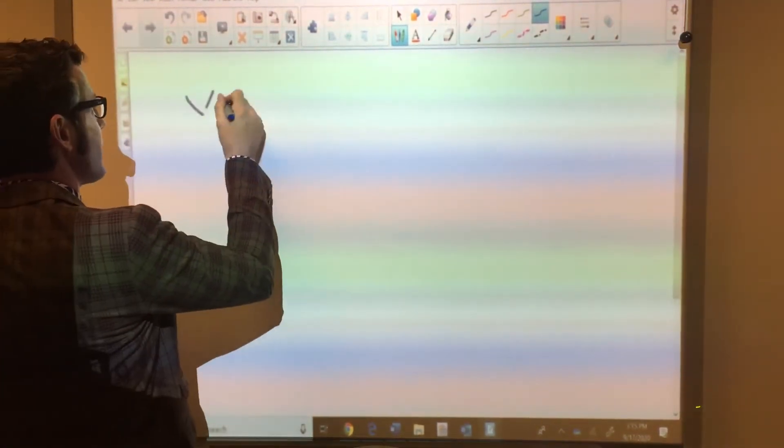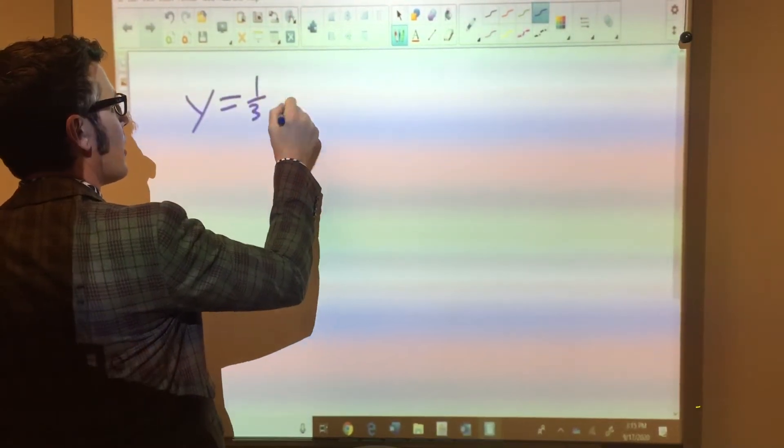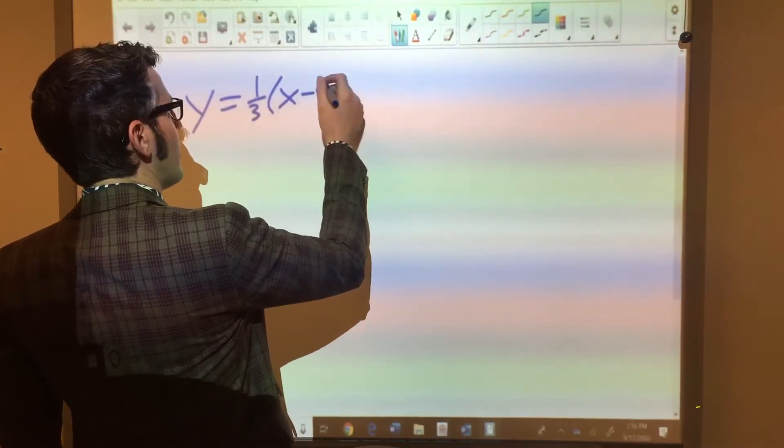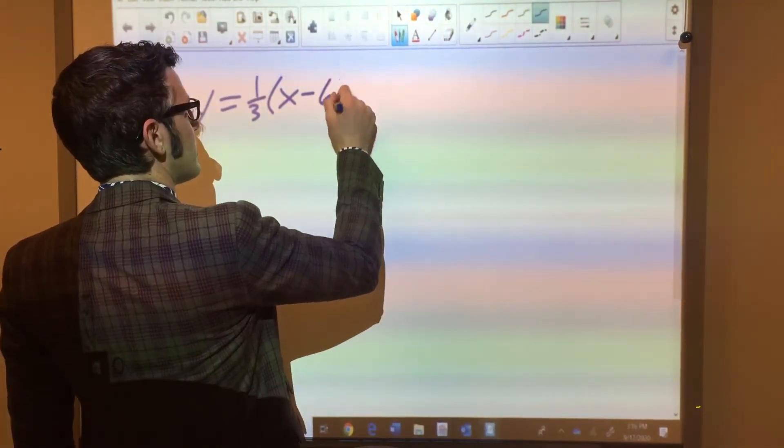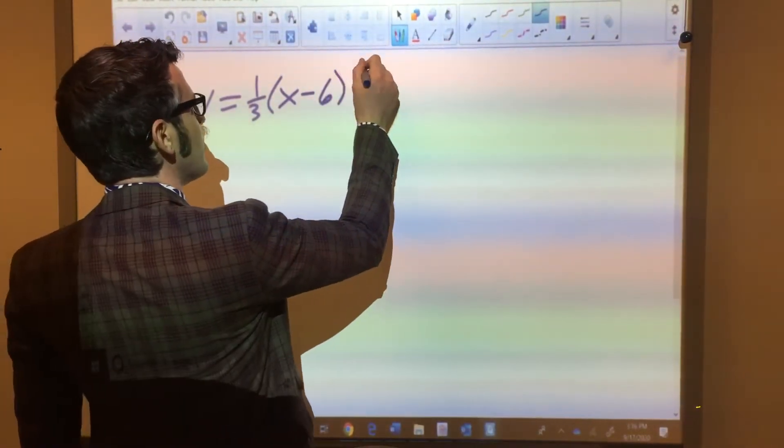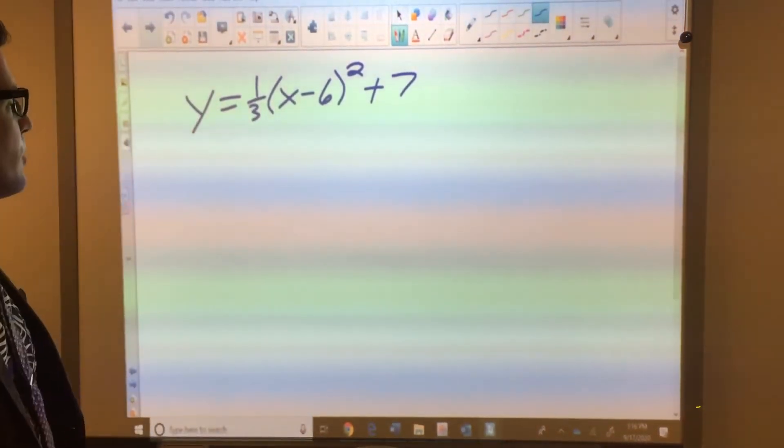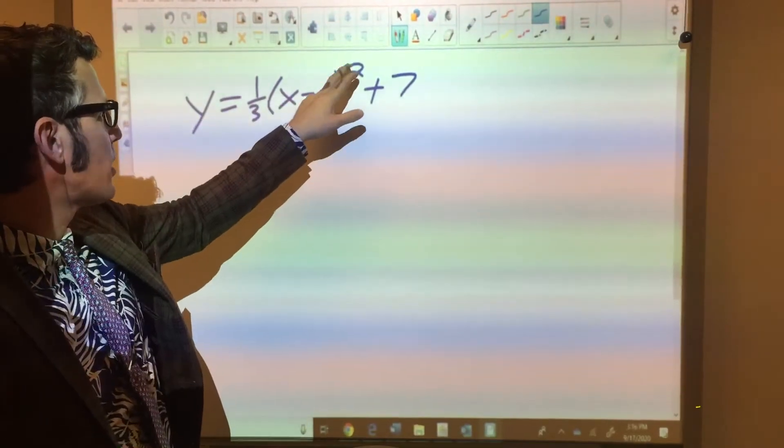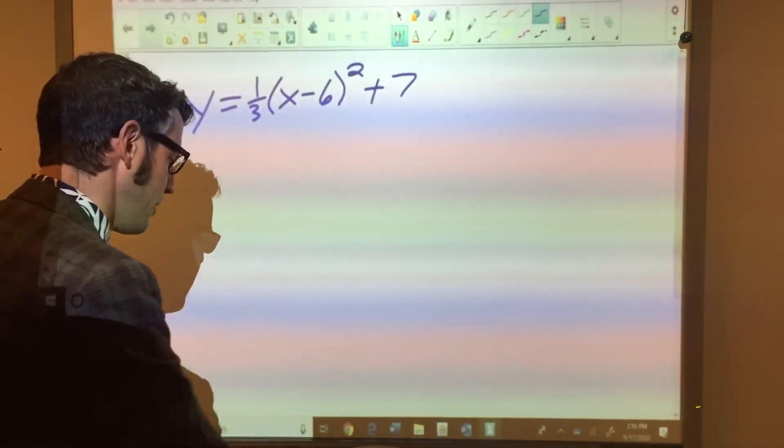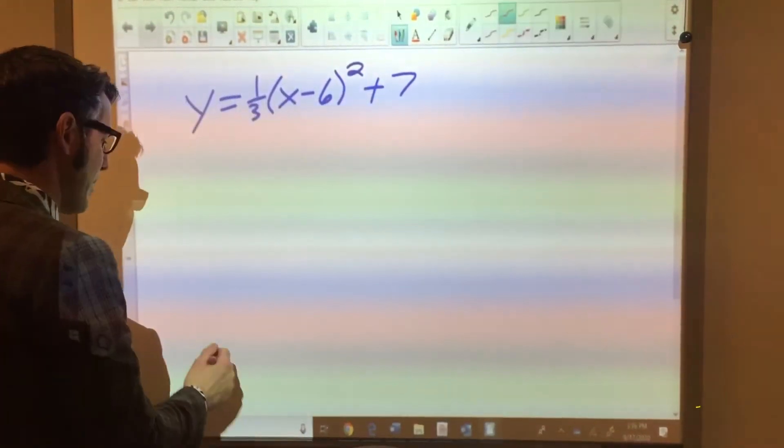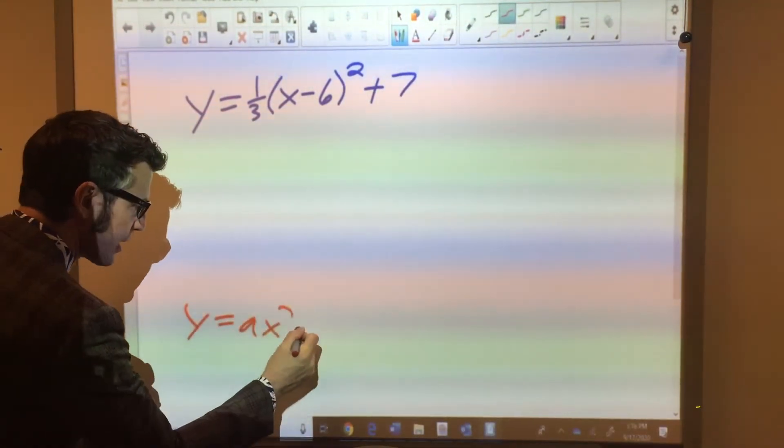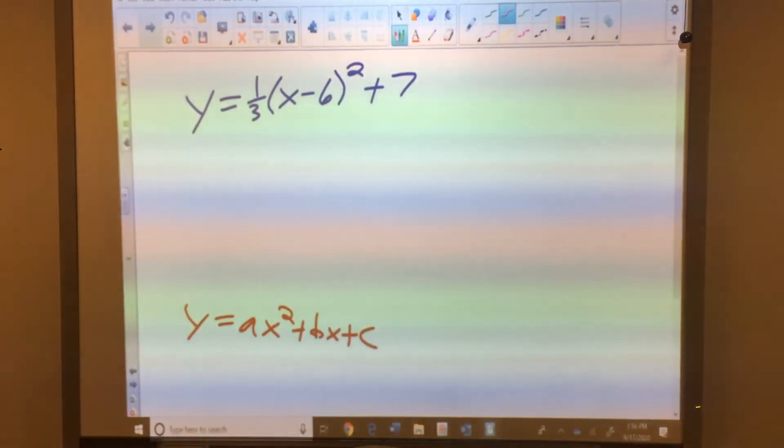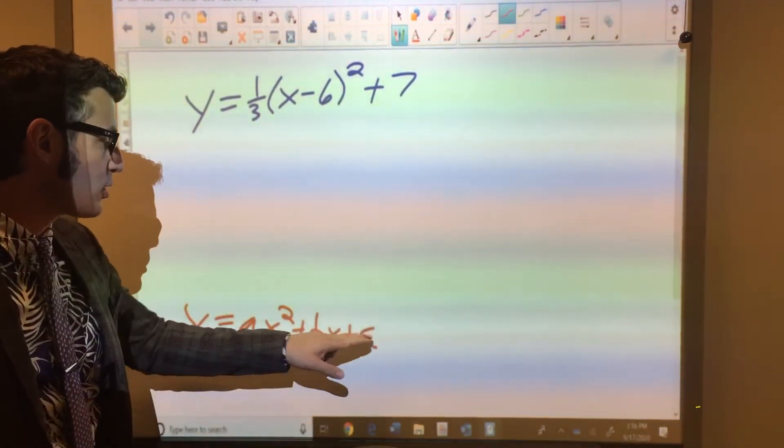Let's say we have something like y equals 1/3(x - 6)² + 7, okay? So this is vertex form, this y equals a times (x - h) squared plus k. I'm going to convert this into standard form. I know my standard form, this is where I'm heading, is y equals ax² + bx + c. So I don't want any parentheses, I want a squared term, a linear term, and a constant.